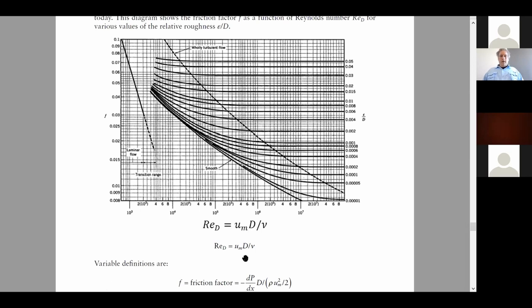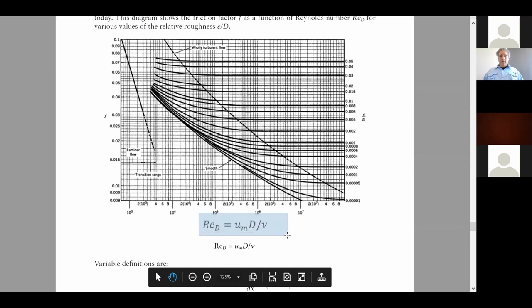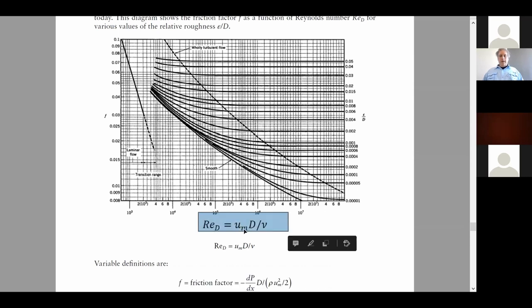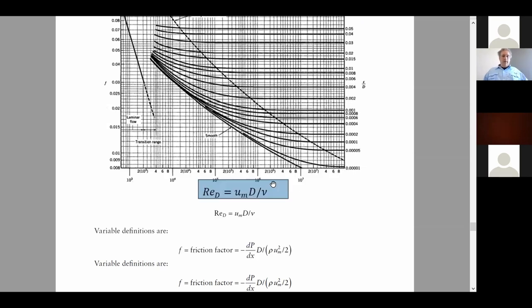The Reynolds number is a dimensionless velocity. This has to do with friction in a pipe, friction in a round pipe. The Reynolds number is the average velocity in the pipe diameter over its viscosity. It's named after Osborne Reynolds. The f is called a friction factor.